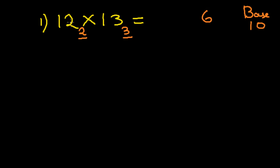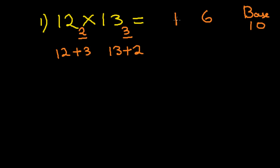Next we have to add 12 and 3, or we can add 13 and 2. You will notice that either way it is 15. So you can either add 12 + 3 or 13 + 2 — either way the answer is 15. So therefore 12 × 13 is 156.